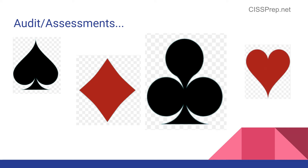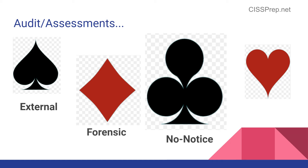It doesn't matter what game you're playing — whether it's poker, blackjack, or go fish. We can assign different attributes to the game we're playing or the audit we're conducting, and each attribute would be based on management's decision about what type of audit or assessment should happen. Notice here a few types of assessments that can be combined, which we'll dive into a little bit more.